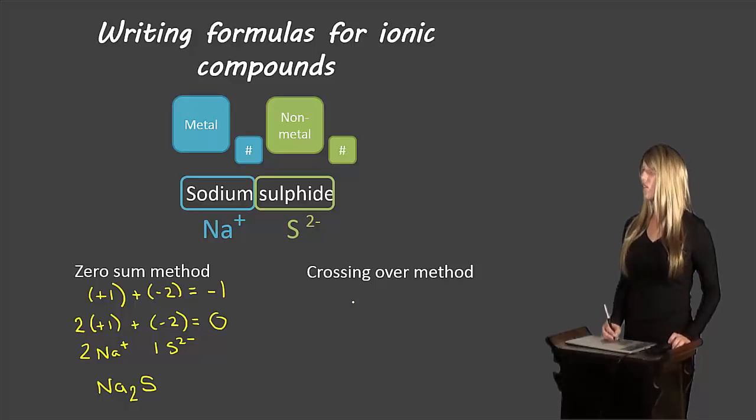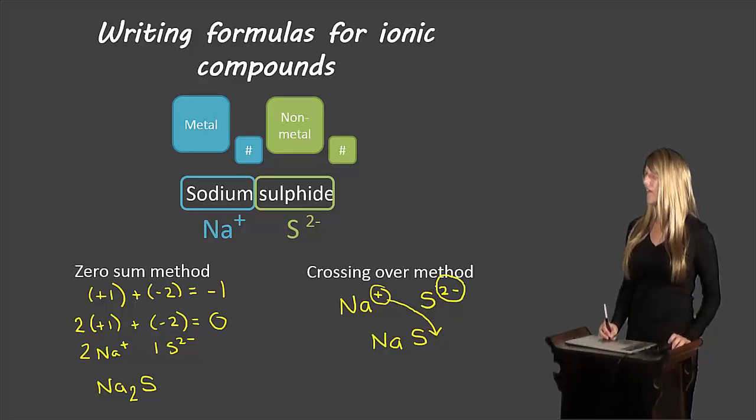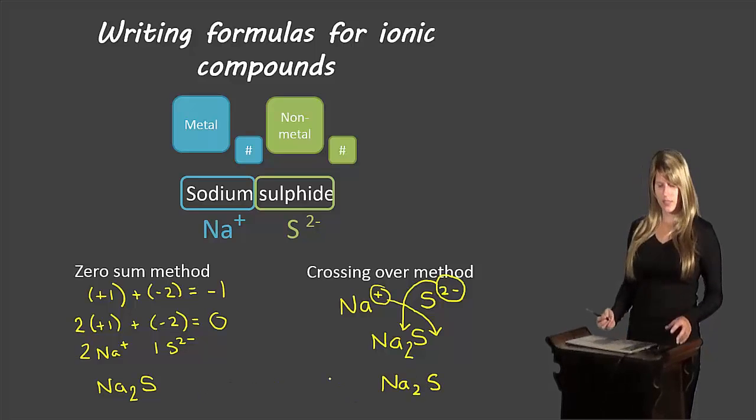Let's try the crossing over method. So sodium has a one plus charge, and the sulfide ion has a two negative charge. If we cross over, so we'll start off by writing the symbols next to each other. This one plus charge goes here to sulfur, and we don't write subscript ones, so we just leave it blank. And then the two negative charge of sulfur comes over to the sodium, and we write the two there. So our answer is Na2S. And we can see that both methods gave us the same answer.